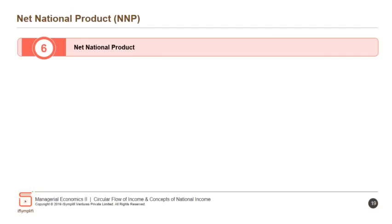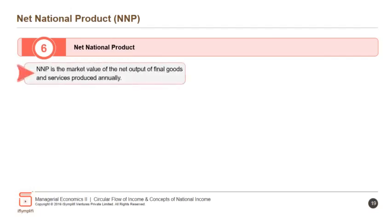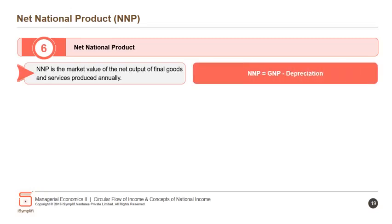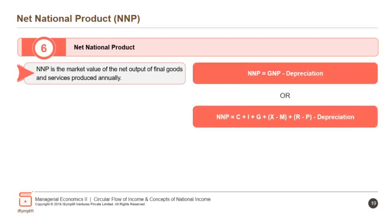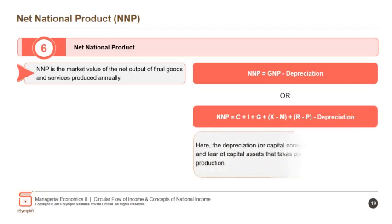Net national product (NNP) is the market value of the net output of final goods and services produced annually. NNP = GNP − depreciation, or NNP = C + I + G + X − M + R − P − depreciation. Depreciation, or capital consumption, refers to the wear and tear of capital assets that takes place during the process of production.